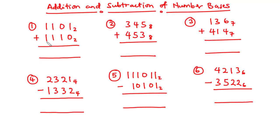For question one, we have 1101 base 2 plus 1110 base 2. Let's add the two values: 1 plus 0 is 1, 0 plus 1 is 1, and then 1 plus 1 is 2.